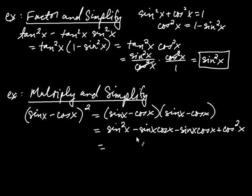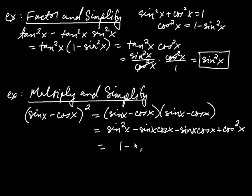Simplifying: sine squared plus cosine squared equals 1 by the Pythagorean identity. And the two minus sine x·cosine x terms combine. So the answer is 1 minus 2·sine x·cosine x.